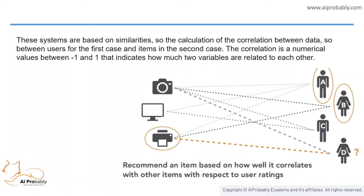Here we can see that A likes a camera, laptop, and printer; B likes a camera and a printer; and C likes a laptop and a camera. So if D buys a camera, would a printer be recommended to D? Yes, based on Pearson's coefficient the value would come out to be between zero and plus one, and hence D would also be recommended a printer. The more the value moves closer to zero, the lesser would be the linear dependency on the variable.